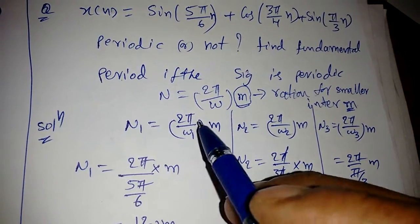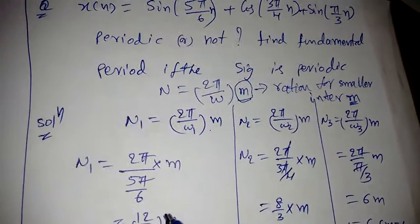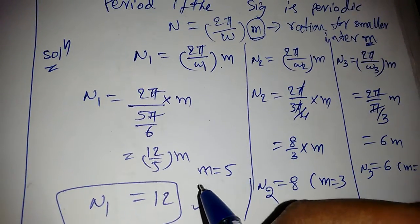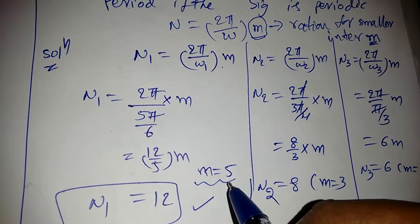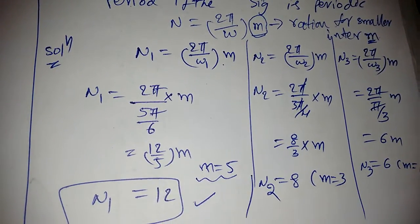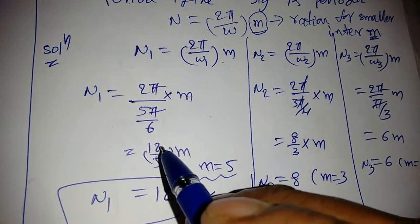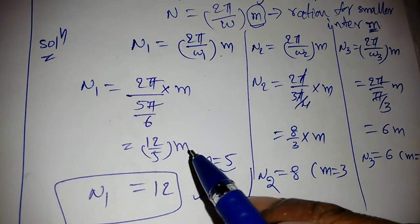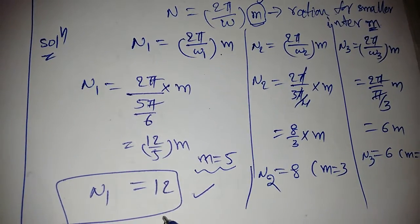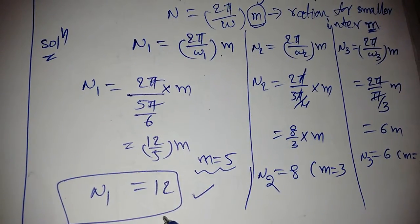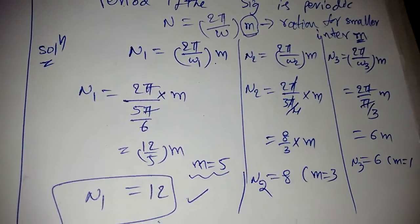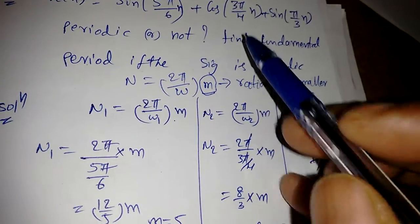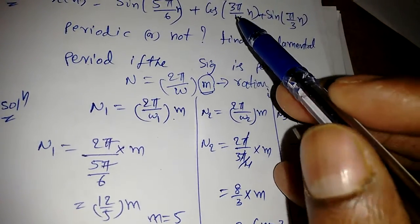For the first component, N1 = (2π/ω1)·m = (2π)/(5π/6)·m = (12/5)·m. For this to be an integer, the smallest m is 5, giving N1 = 12.